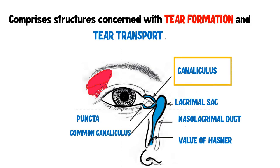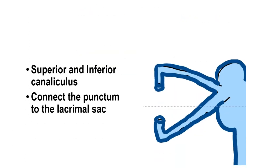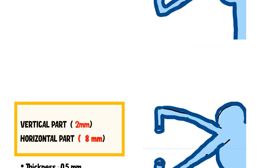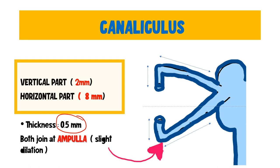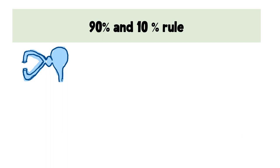Moving on, the next structure is the canaliculus. The superior and inferior canaliculi connect the punctum to the lacrimal sac. Each canaliculus is divided into two parts: a vertical part of about 2 mm in length and a horizontal part of about 8 mm, giving a total length of approximately 10 mm and a thickness of about 0.5 mm. The two parts meet at a slightly dilated junction called the ampulla of the canaliculus.